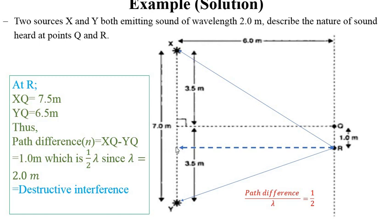When that is carried out, we end up with a path difference of 1.0. If you take path difference over wavelength, which is 2.0, we end up with a half. This fraction of a wavelength simply indicates a destructive interference. I think that is clearly understood how we arrive at that.